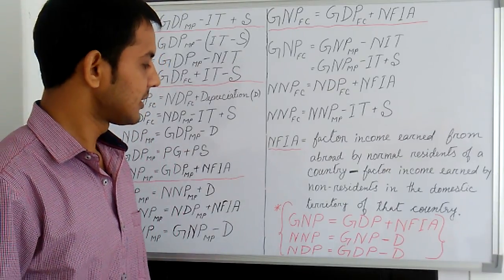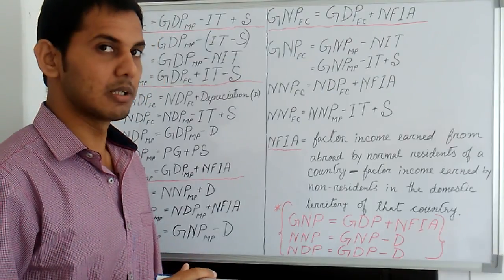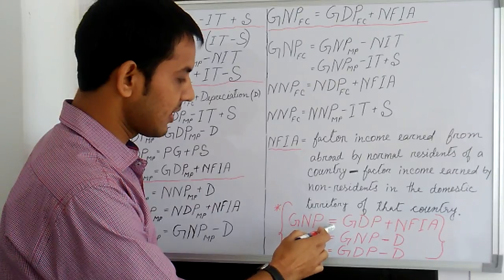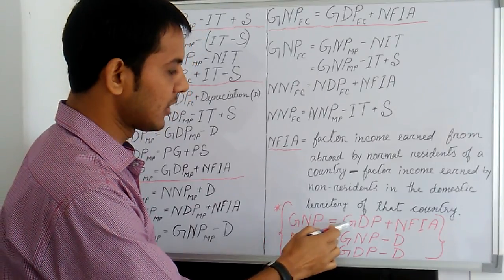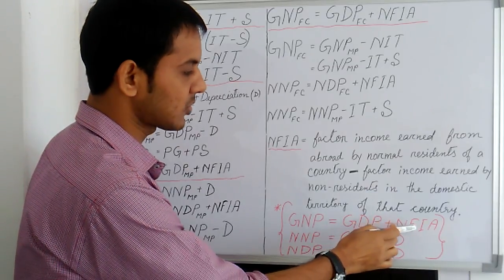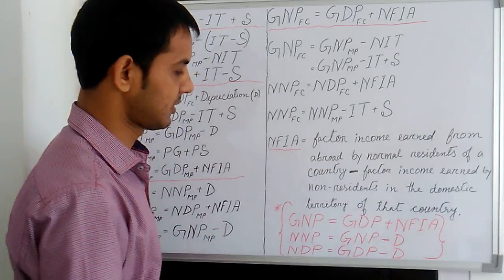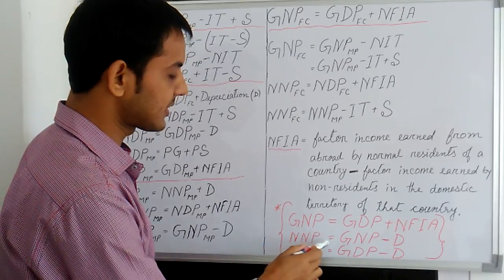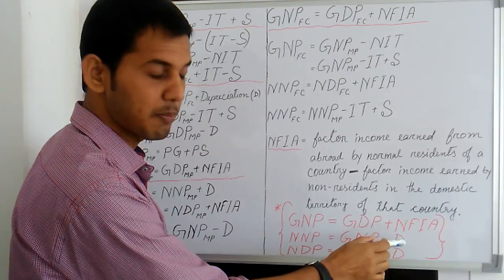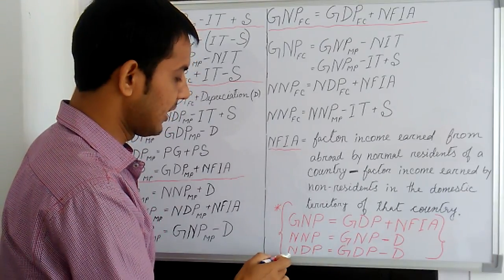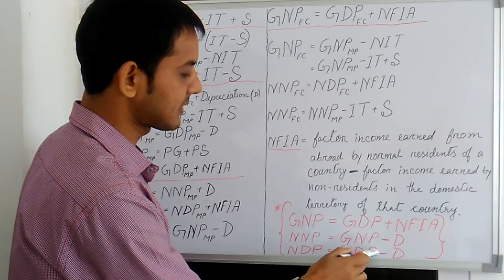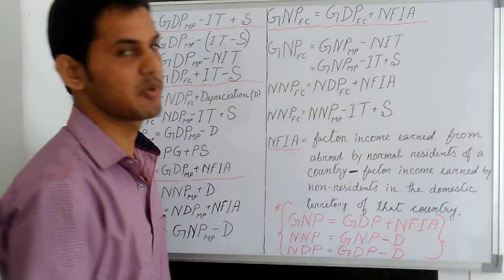In simple terms: GNP, gross national product, equals gross domestic product plus net factor income from abroad. Net national product equals gross national product minus depreciation. And net domestic product equals gross domestic product minus depreciation.